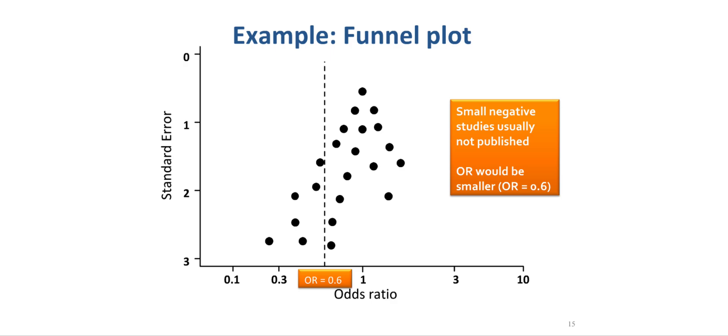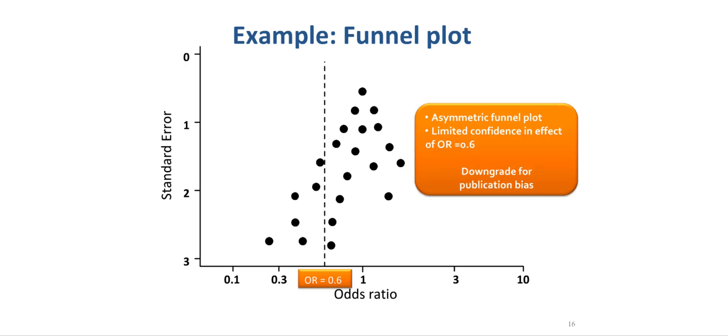What frequently happens is that small positive studies are more likely to be published than small negative studies. Under such circumstances, if one were to remove the small negative studies indicated here by an odds ratio greater than 1, the overall estimate of effect may spuriously indicate an odds ratio that is smaller than 1, potentially indicating a benefit from an intervention in regards to a specific outcome. The funnel plot would not be symmetric, and this would be an indication for publication bias, leading to downgrading the quality of the evidence and limiting the confidence in the estimate of effect. Depending on the degree of publication bias, one would downgrade by one or two levels.